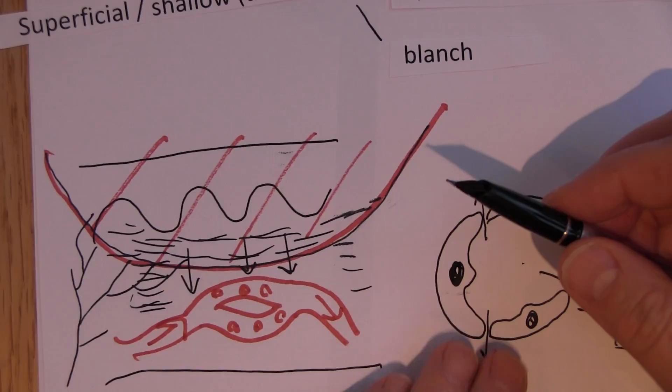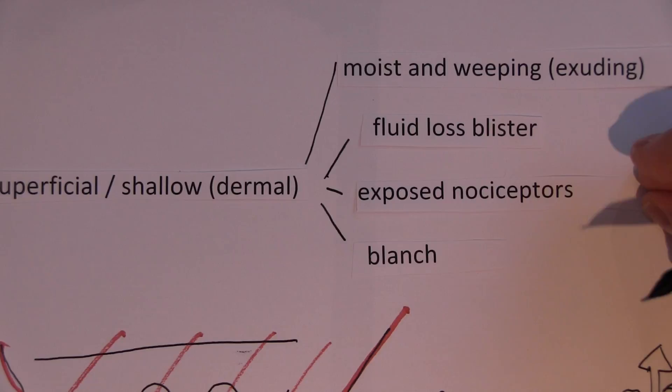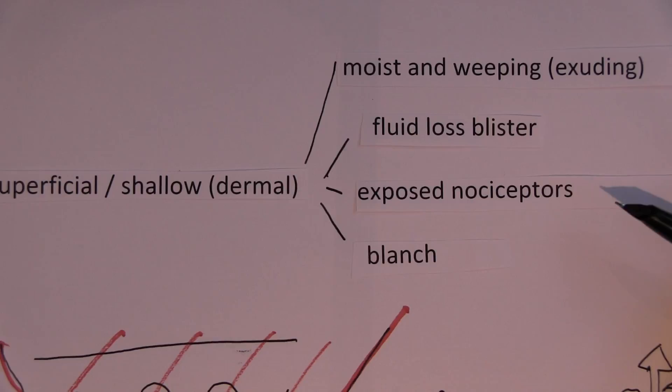So we've got fluid loss, moist wounds. We've got blistering. We've got great pain from the exposed nociceptors. And we've got preserved blanching.